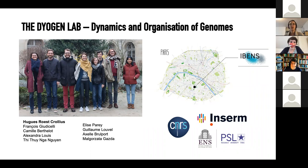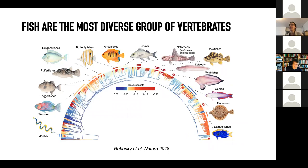We are the Diogenes Lab, which stands for Dynamics and Organization of Genomes. We are situated in the middle of Paris, and we are mostly a comparative genomics group — a multi-PI group. I'm working with other senior and junior PIs, especially Hugues Crollius. The project I'm going to speak about today is about fish.